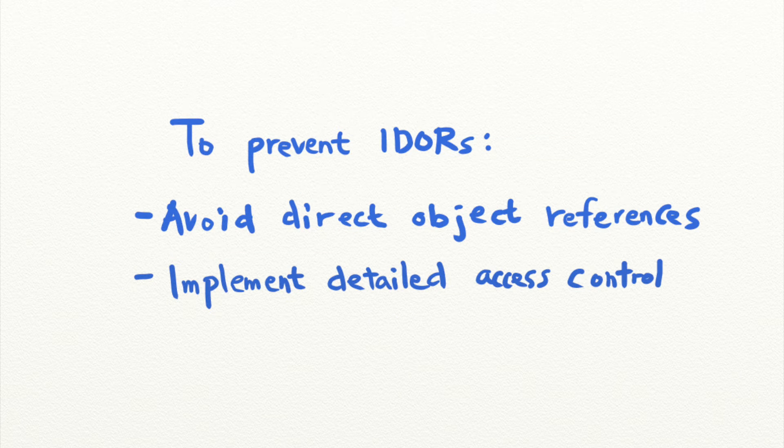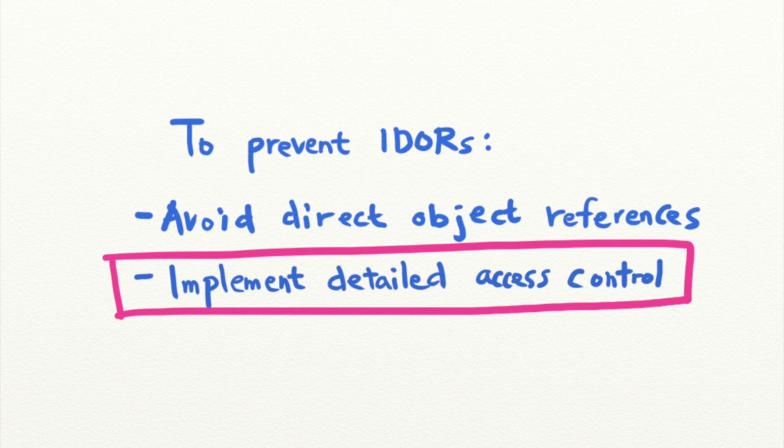So the second thing you should do to prevent IDORs is to implement robust access control. For each piece of application resource that should be restricted, you should verify that the user is indeed authorized to access it.